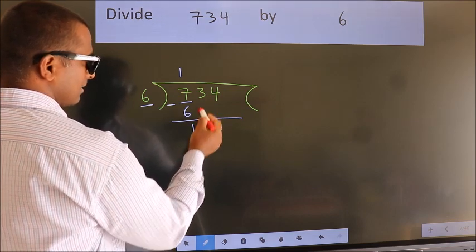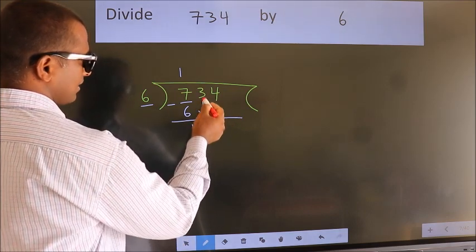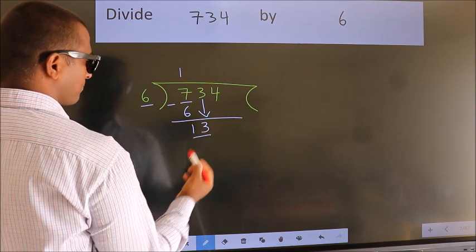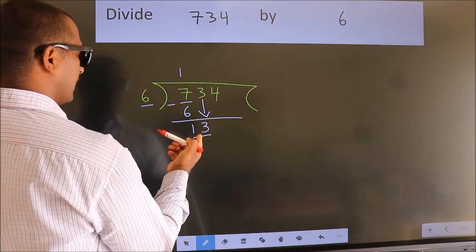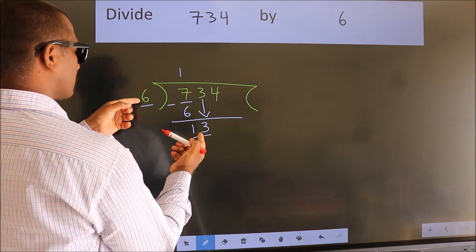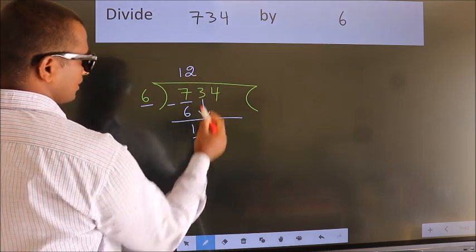After this, bring down the beside number. So 3 down. So 13. A number close to 13 in the 6 table is 6 twos 12.